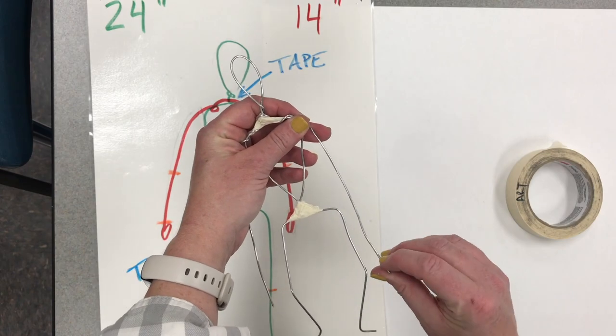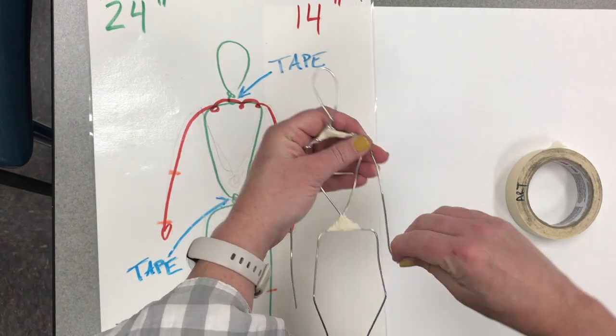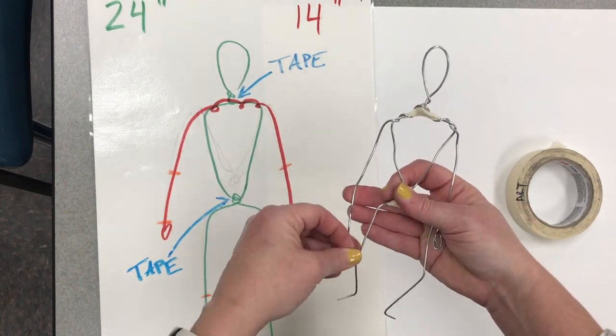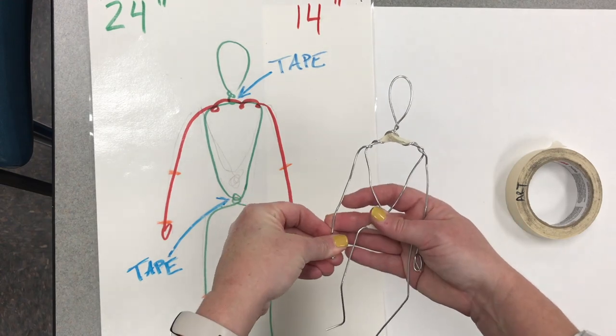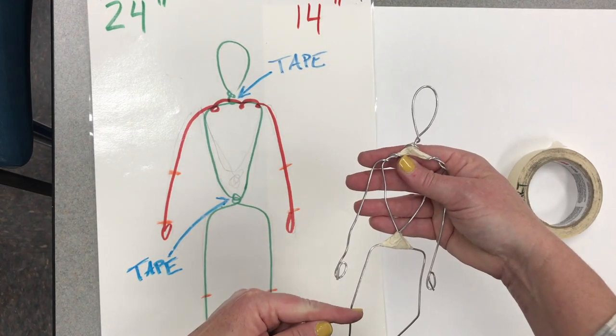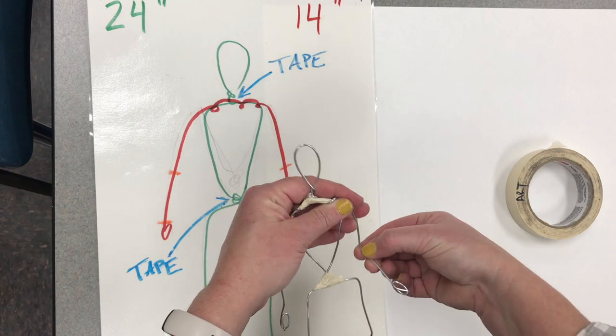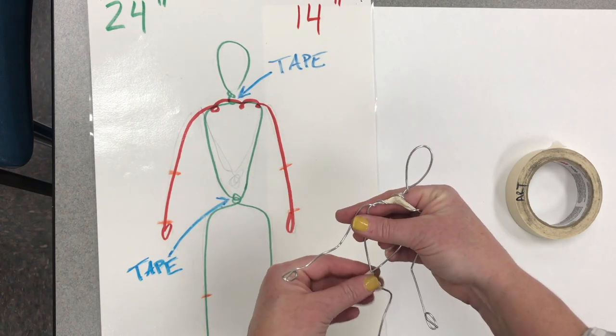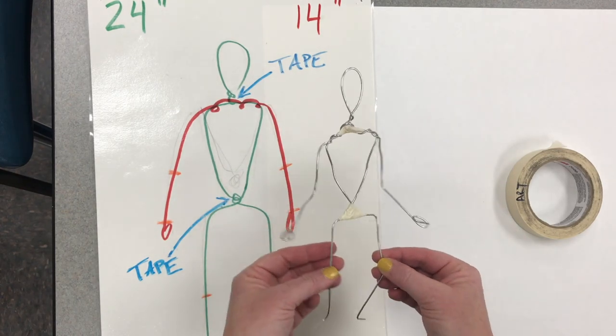Bend them down. And if you find that your hands are too long, fold them up to make mitten hands and aim for your hands to be about halfway from the hips to the knees. Bend at the elbows. And there you go. There's your wire armature.